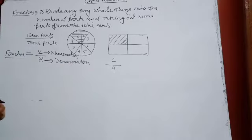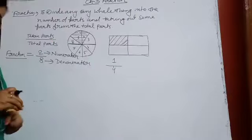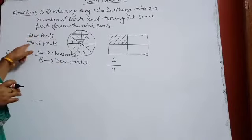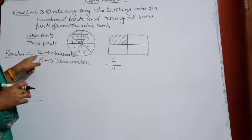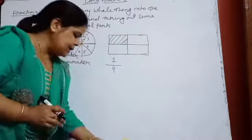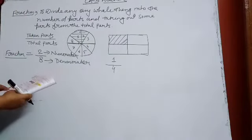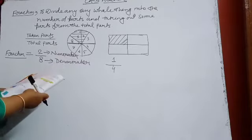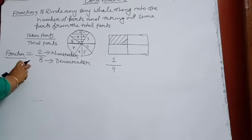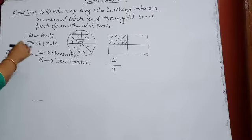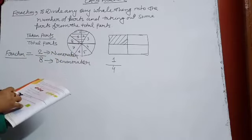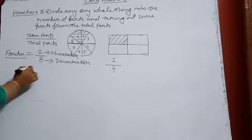In this way, you have to represent the following fractions in your notebook using any plane geometrical shape. The upper part of the fraction is known as the numerator and the lower part is known as the denominator. Now come to exercise 5.1. Represent the following fractions — for example, 3 upon 5 in exercise 5.1.